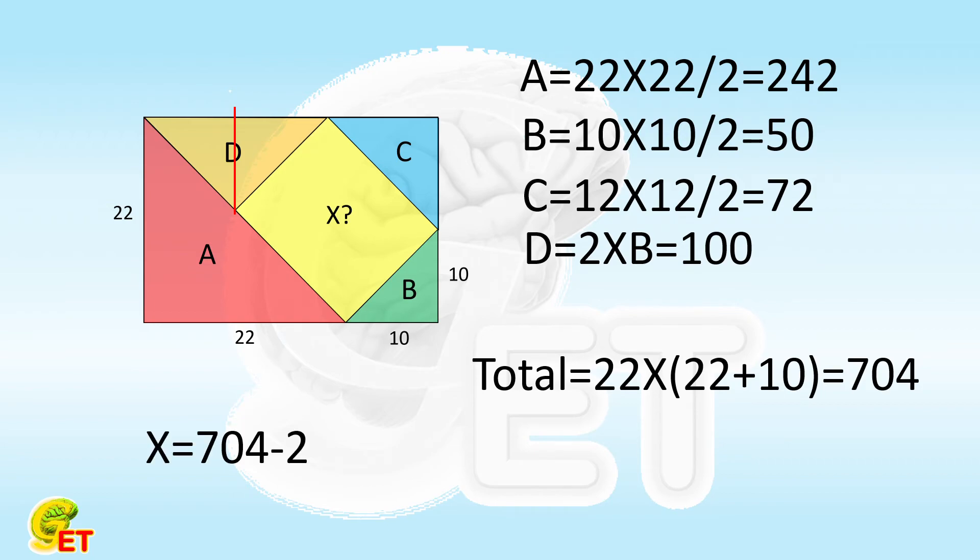Therefore, the area of the shadow part is 704, minus 242, minus 50, minus 72, and minus 100, equals 240. So, we make it.